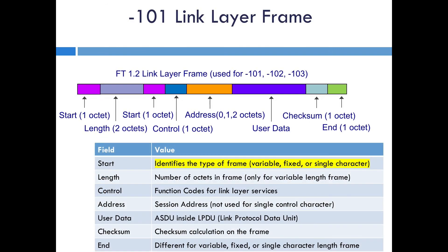Now let's take a look at the link layer frame. The specs have different formats, so this is the FT1.2 frame which is used for 101. It's built up with all of the fields that you see here. To start, it identifies what type of frame it is. The frames can be either fixed length, variable length, or single character. The next field is the length, which tells you how many total octets are in the frame. This is really only needed for the variable length frame. Then there are function codes for the link layer services, and the session address which is the address of the device or session of the target. Next comes the user data which is the ASDU, put inside this LPDU. And finally the checksum and an end octet, which is different for the different frame types.